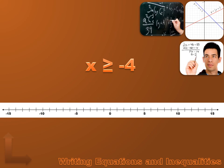What if the expression is x is greater than or equal to minus 4? We'd graph that differently. We paint in the circle — it's a closed circle over minus 4 — meaning minus 4 is part of the solution. Minus 4 is greater than or equal to minus 4. Every number to the right is also a solution, and we draw an arrow indicating it goes on forever.